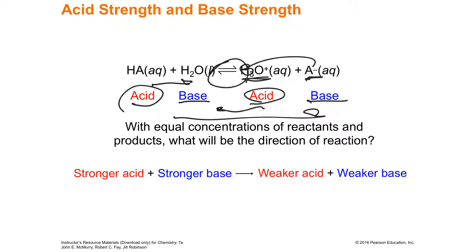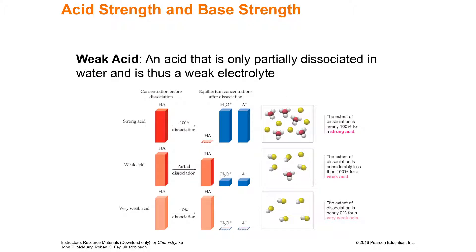Strong does not mean corrosive. Someone might think strong means it'll burn more or melt your face off, but strong is not the same as corrosive. A strong acid simply means it's more likely to give away all of its hydrogens — the more likely it is to throw away its hydrogens, the stronger we call it.